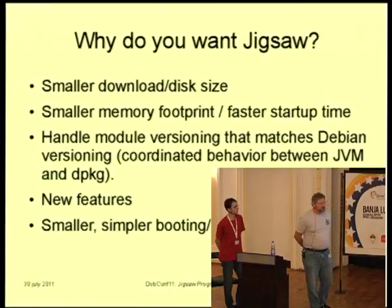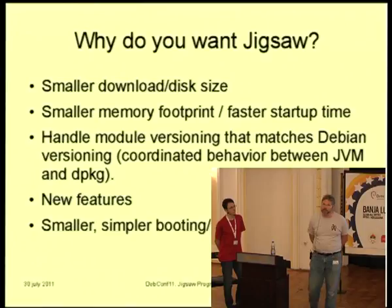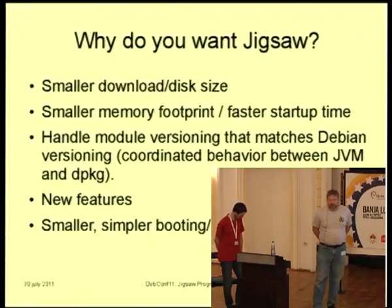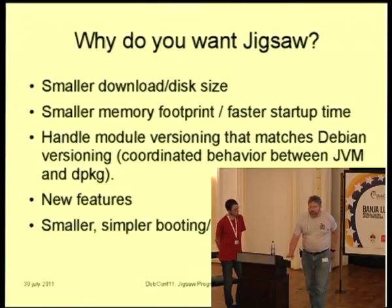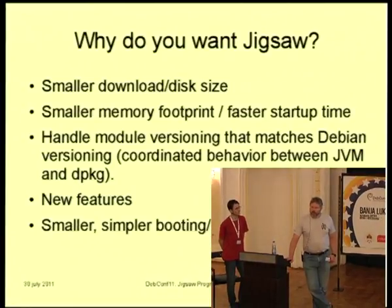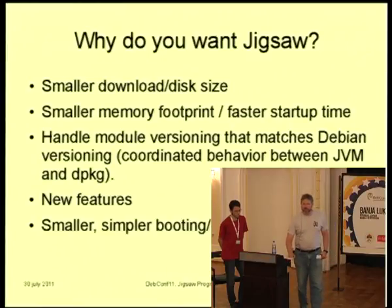Another reason that Jigsaw is interesting has to do with some of the new features that have come along since OpenJDK 6, which is currently in the archive. Another really interesting thing for us is that we'll hopefully get out of modularizing the JDK a simpler porting and bootstrapping process, so that when we go to new architectures it should be easier to bring up the JDK. Maybe we can even simplify some of our build depends for Java itself, potentially even eliminating some of the need for either ECJ or GCJ.